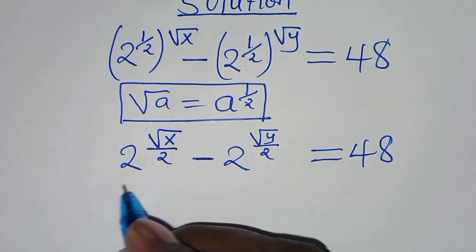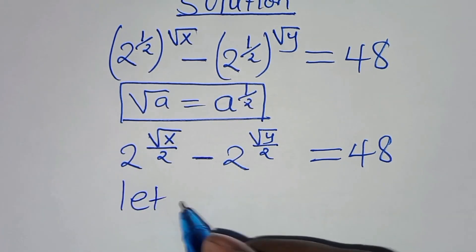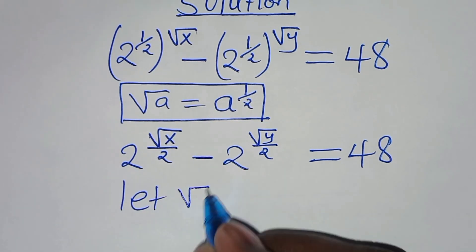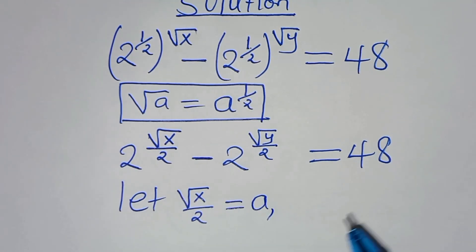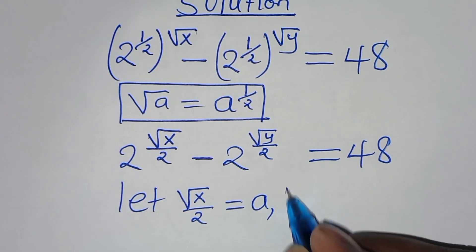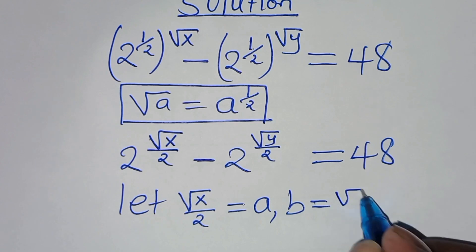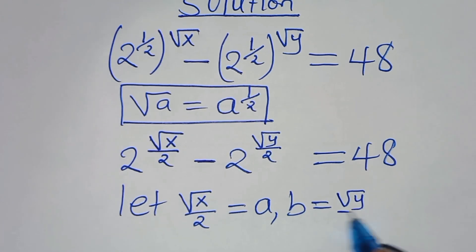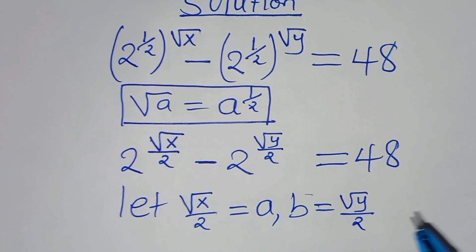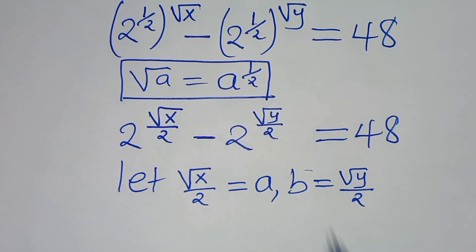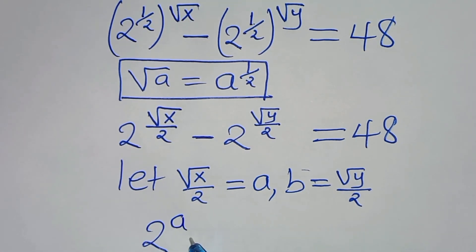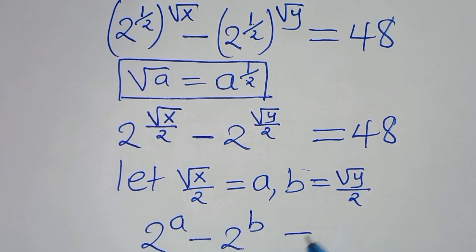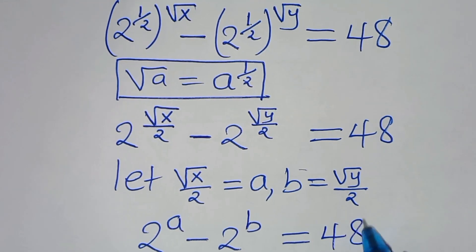The next step is that we can let square root of x over 2 equal to a, and we can express square root of y over 2 equal to b. Therefore from here, we have 2 to the power of a minus 2 to the power of b, this is equal to 48.